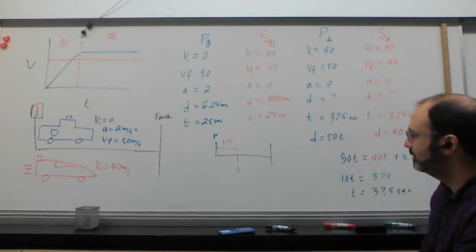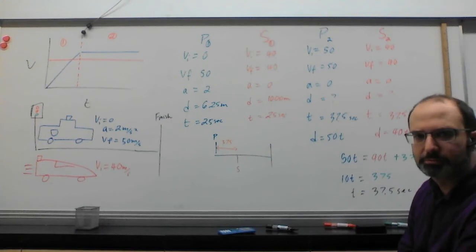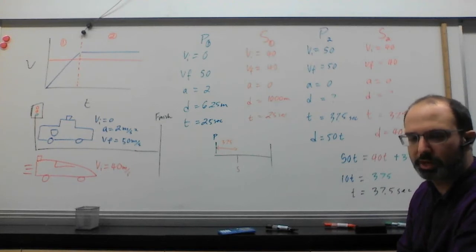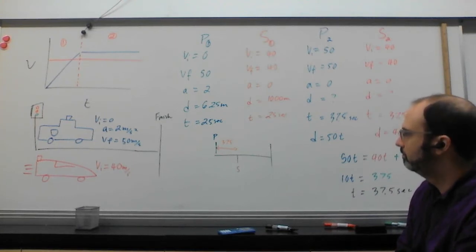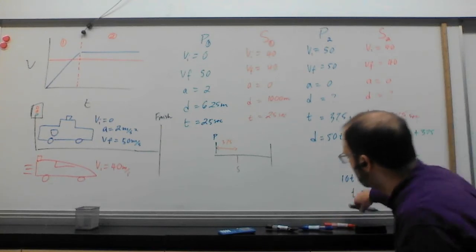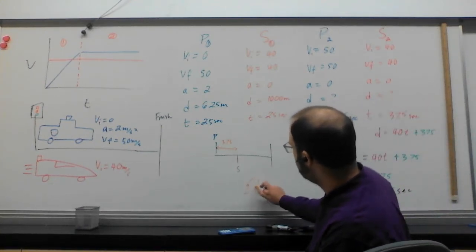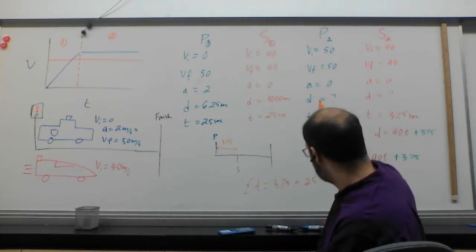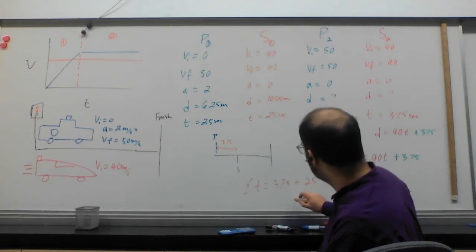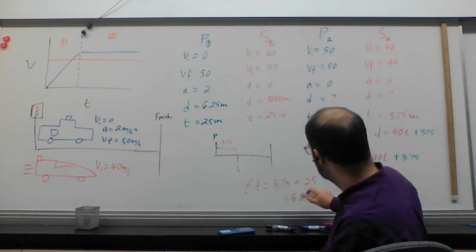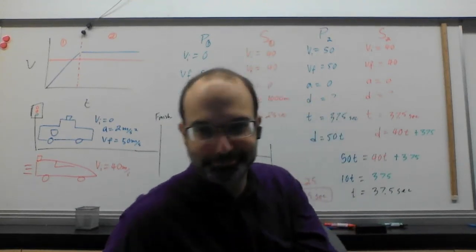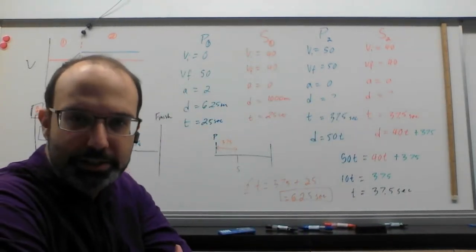Now what do I do? Well, the question said, how long is the whole chase? 37 plus 25. 25 for the first part, 37 for the second part. We're done. I add them together. Total time is 37.5 plus 25. So we're looking at, that's going to be a 2.5. Carry the 1 for 62.5 seconds. Did I do my mental math right? Maybe. Hopefully. So that's it. That's the advanced chase problem.